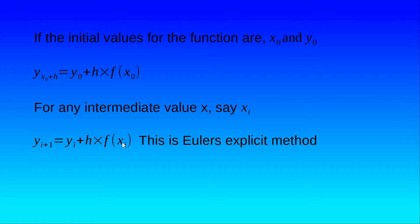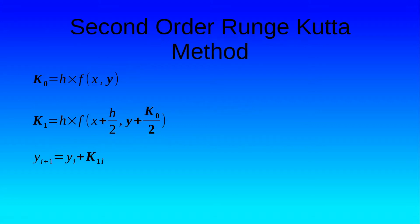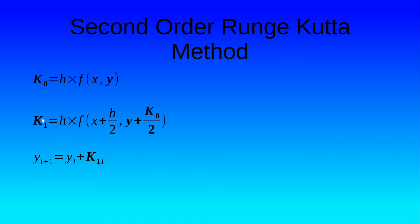The second order and fourth order Runge-Kutta methods are also known as modified Euler's method, because they use the same algorithm of Euler's method with modifications to achieve better accuracy. In the second order method, we first calculate k0 which equals h·f(x, y), then we calculate k1 which equals h·f(x + h/2, y + k0/2), and then we get yi+1 equals yi plus k1.